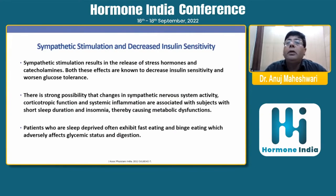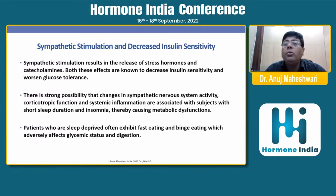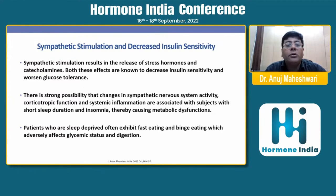Sympathetic stimulation is connected with insulin resistance — that is, decreased insulin sensitivity. It results in release of stress hormones and catecholamines, which decrease insulin sensitivity and worsen glucose metabolism. There is a strong possibility that changes in sympathetic nervous system activity, hypothalamo-pituitary function, and systemic inflammation are associated with short sleep duration and insomnia, thereby causing metabolic dysfunction. Sleep-deprived patients also exhibit fast eating and binge eating, which adversely affect metabolic status and digestion.